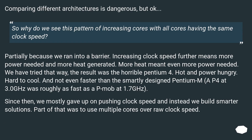Comparing different architectures is dangerous, but okay. So why do we see this pattern of increasing cores with all cores having the same clock speed? Partially because we ran into a barrier. Increasing clock speed further means more power needed and more heat generated. More heat meant even more power needed. We tried that approach — the result was the horrible Pentium 4: hot, power hungry, hard to cool, and not even faster than the smartly designed Pentium M. A P4 at 3.0 GHz was roughly as fast as a Pentium M at 1.7 GHz. Since then we mostly gave up on pushing clock speed and instead build smarter solutions.